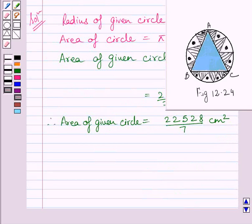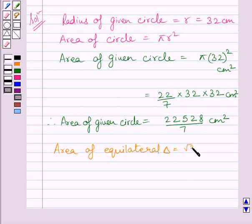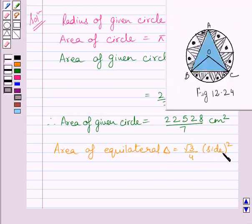Now, clearly we can see, to find the area of the design, we will subtract area of equilateral triangle ABC from area of the given circle. So now we will find out the area of triangle ABC. We know area of equilateral triangle is equal to root 3 upon 4 multiplied by side square. We will find out the side of triangle ABC.